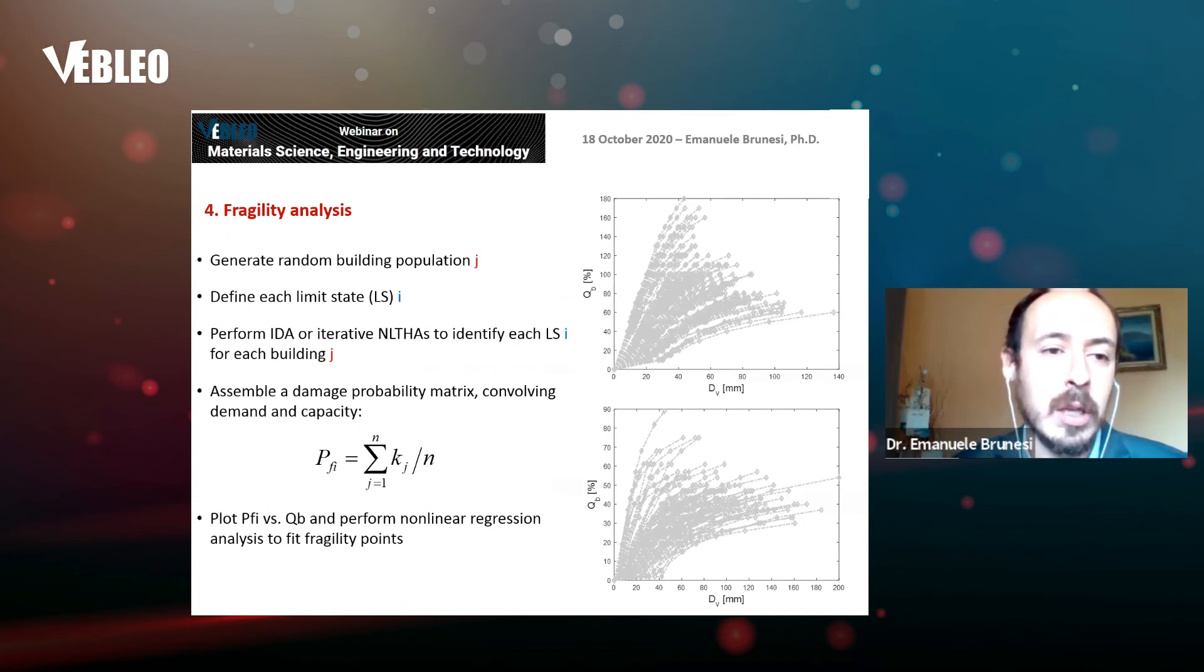We move on with fragility analysis, meaning you need to generate random portfolios of buildings, define different limit states, perform IDA or iterative nonlinear time history analysis to identify attainment of each limit state for each building. Then assemble a damage probability matrix and compute the probability of occurrence or exceeding that specific damage state, to plot the probability of failure versus the intensity measure QB. Then perform nonlinear regression analysis to fit fragility models.